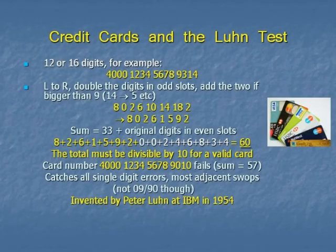You work from left to right. You take every other digit — so all the odd-placed ones: the first, the third, the fifth, and so forth. You double them. If the result you get is bigger than 9, then you just go round again.